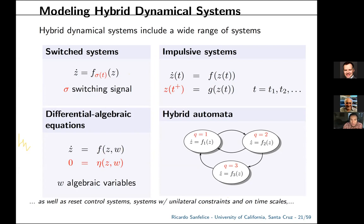This hybrid system framework is finite-dimensional and allows modeling of switched systems where the switching signal sigma is generated by a hybrid model, impulsive system models where jump times are encoded in the jump set, and hybrid automata which are prevalent and useful for applications especially for implementation.